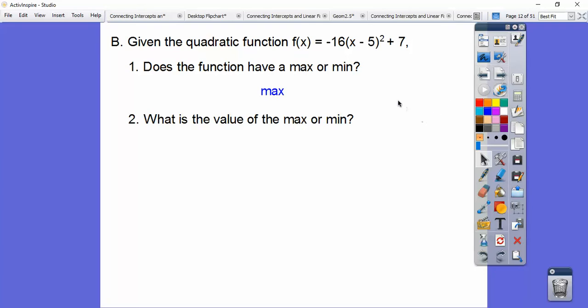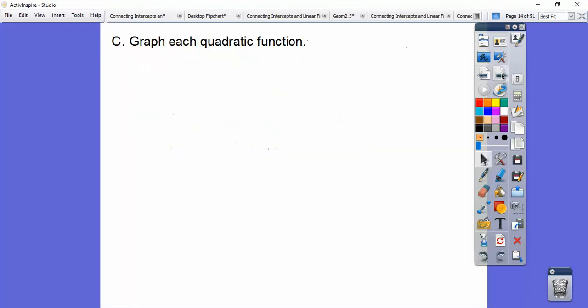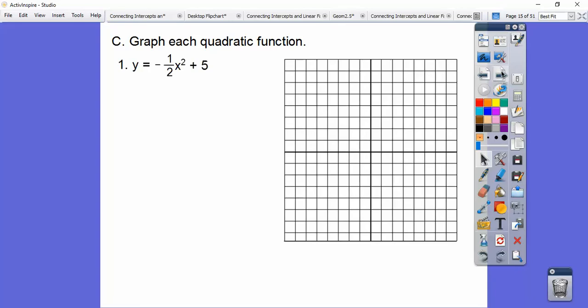So the value is a y answer, and it's the y coordinate of your vertex. So the vertex is at hk, so 5, 7. So y equals 7 is that max value right there.